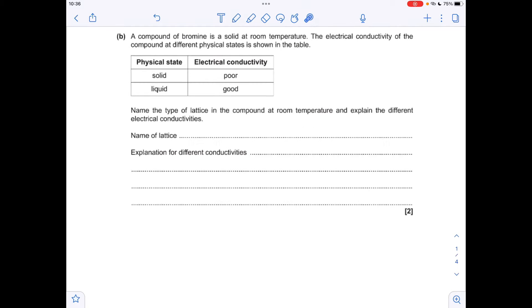So moving on to part B, you've got to establish the type of bonding here from the electrical conductivities. In the solid state it's poor but in the liquid state it's good, so it's obviously ionic. The lattice is a giant ionic lattice.